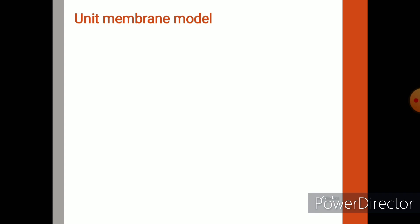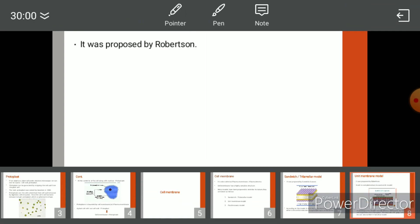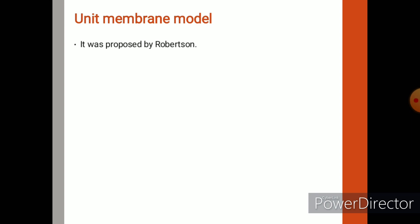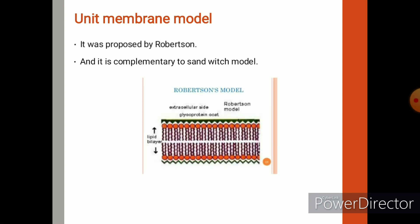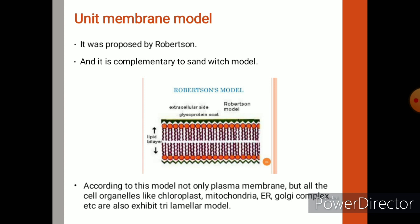The unit membrane model is proposed by Robertson. According to this model, not only cell membrane but also mitochondria, endoplasmic reticulum, etc. share a similar structure. It is the same as the sandwich model, but the difference is that Danielli and Davson said proteins are spherical or round in shape, whereas Robertson said that proteins are not spherical but are in fibrous, thread-like form.